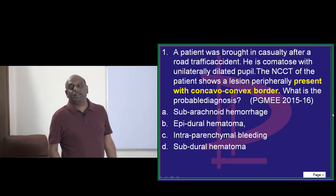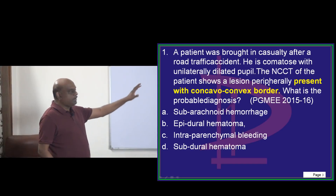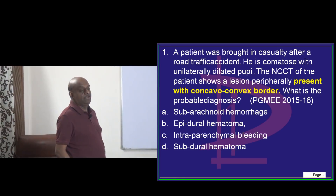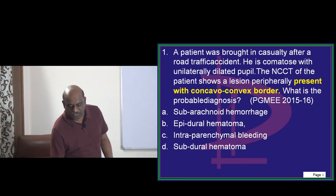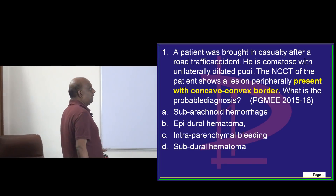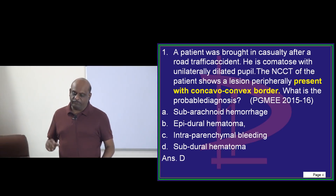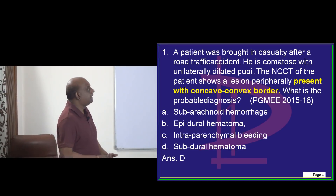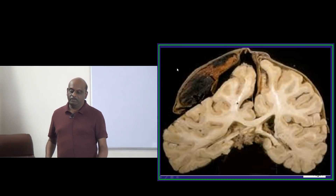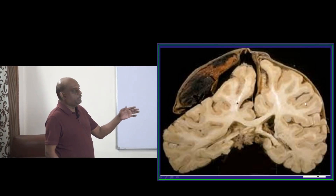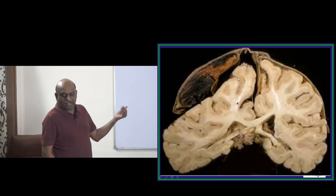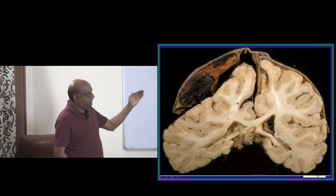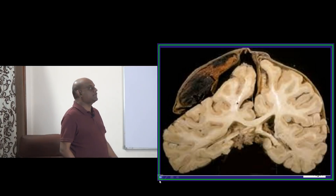A patient was brought to casualty following a road traffic accident, and the non-contrast CT shows a lesion peripherally which is concavo-convex bordered. The probable diagnosis is the question of the examiner. This is a classical story of subdural hematoma. The dura mater covers the brain, and underneath the dura you have the bleed which leads to compression of the cerebral cortical matter — that is called subdural hematoma.